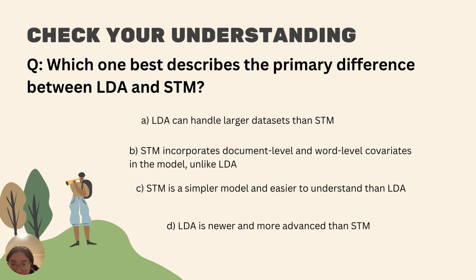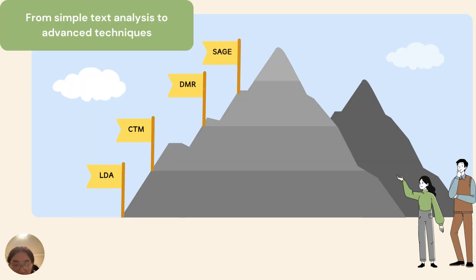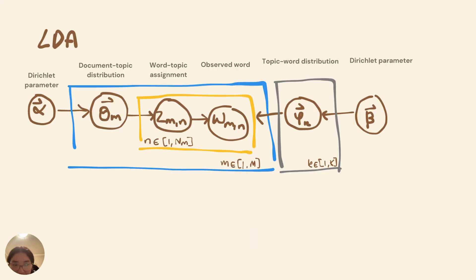Before we move forward, let's take a moment to check our understanding. So how'd you go? All right. So comparing LDA and STM now. In LDA, each document is viewed as a blend of topics where each topic is a word distribution, driven by Dirichlet and multinomial distributions.